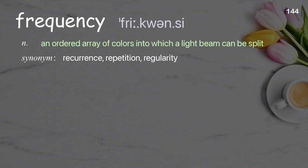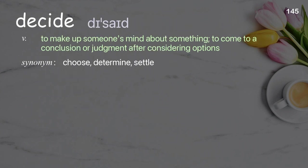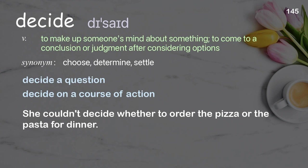Frequency: the rate at which something occurs over a particular period; an ordered array into which a light beam can be split. Examples: frequency band, high frequency. The oscillator hunts for the correct frequency. Decide: to make up someone's mind about something; to come to a conclusion or judgment after considering options. Examples: decide a question, decide on a course of action. She couldn't decide whether to order the pizza or the pasta for dinner.